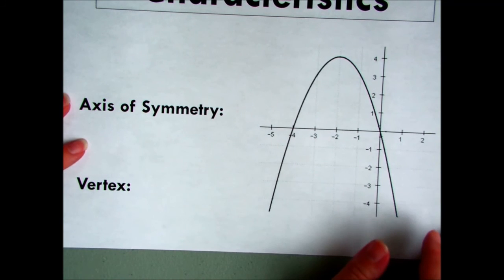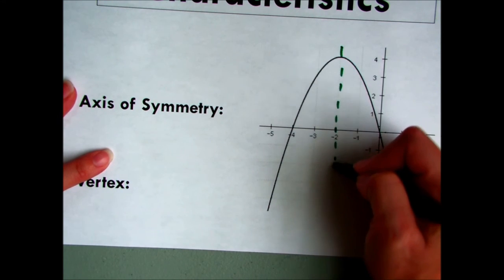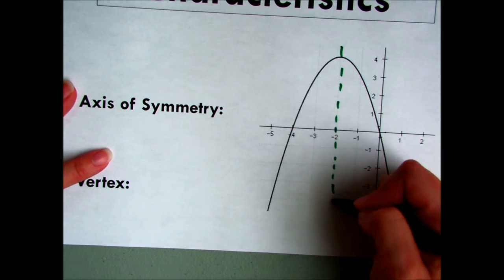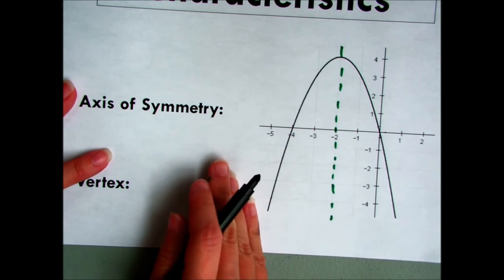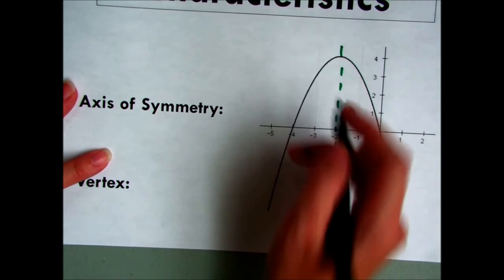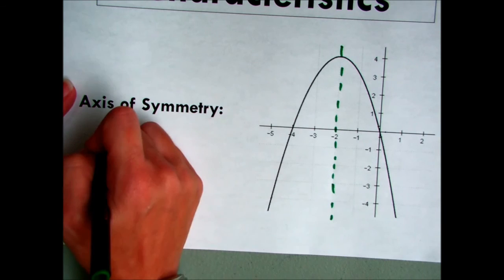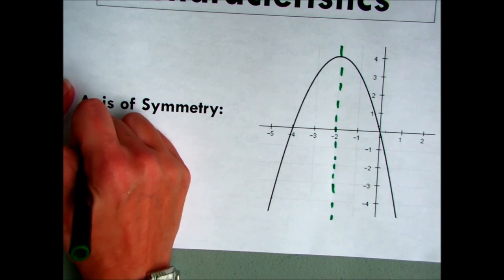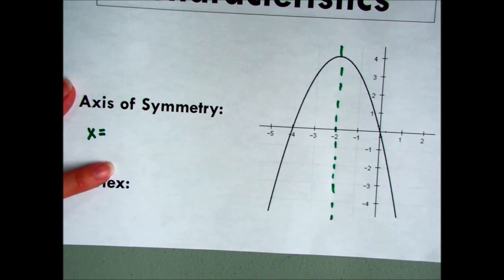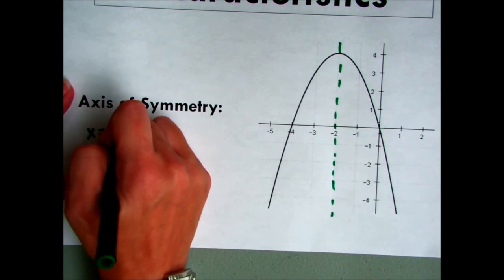Finally, we have the axis of symmetry. That's that line that if you folded it, it will actually cause the graph to be symmetrical or a reflection. So if you fold it on this line, it cuts the graph in half. What's the equation of that line? Well, it goes up and down. Vertical equations are always x equals equations. So x equals, look right here, negative 2.